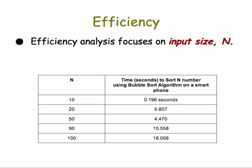Efficiency analysis usually focuses on the size of the input, which is usually abbreviated N. So for example, here is a table showing the amount of time in seconds that it took to sort N numbers on a smartphone using bubble sort. For 10 numbers it was almost 2 tenths of a second. But for a hundred numbers it took 18 seconds. So you can see that the time is growing quite rapidly for bubble sort.